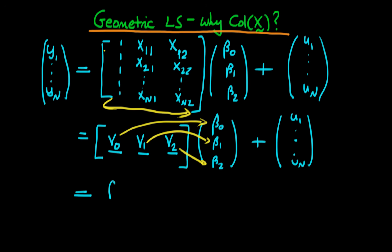So if I write that out in full, we've got beta naught V0 plus beta 1 V1 plus beta 2 times V2, and then finally we've got our error vector U.